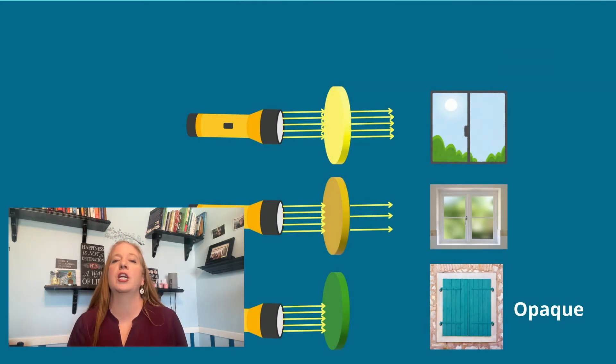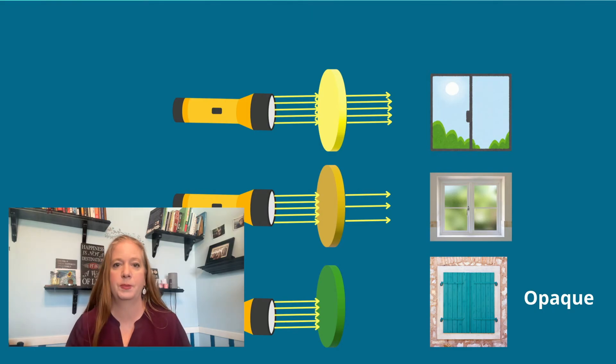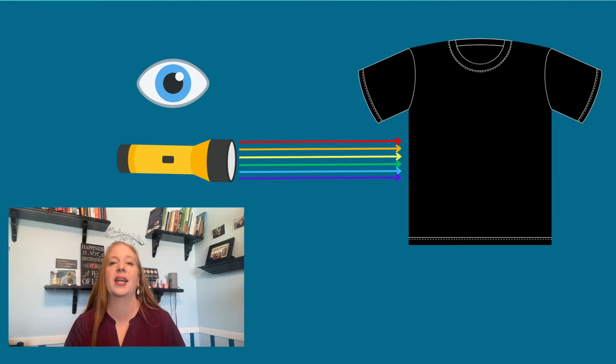We mentioned earlier about opaque objects not allowing light to pass through. When this happens, light is either reflected or absorbed or both. When the wave energy gets transferred to the material, we call that absorption.